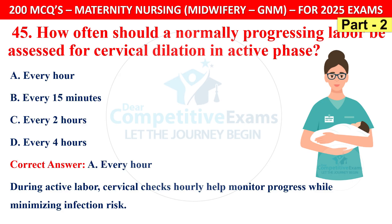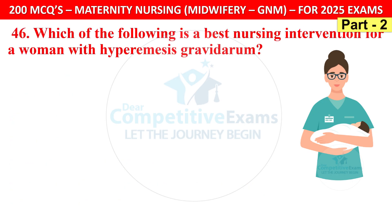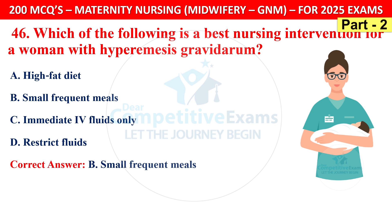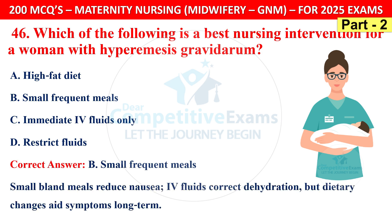Question 46: What is the best nursing intervention for hyperemesis gravidarum? Options are high-fat diet, small frequent meals, immediate IV fluids only, or restrict fluids. The correct answer is B — small frequent meals. Small bland meals reduce nausea; IV fluids correct dehydration, but dietary changes aid symptoms long term.